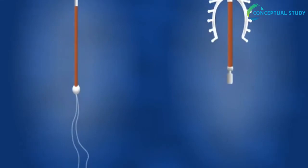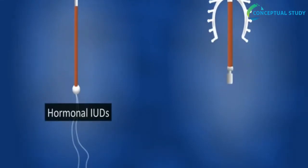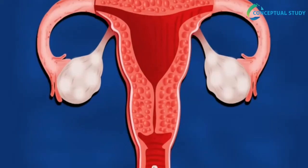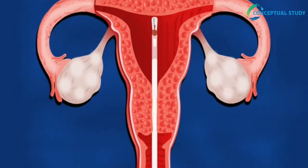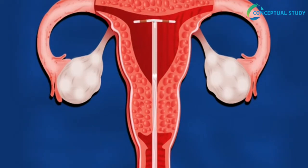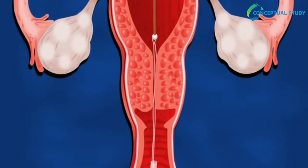There are two types of intrauterine devices: hormonal IUDs and copper IUDs. An intrauterine device, or IUD, is a birth control method consisting of a soft, compressible, T-shaped device. To prevent pregnancy, a surgeon inserts the IUD inside the woman's uterus. This device prevents fertilization of the egg and implantation of the embryo.